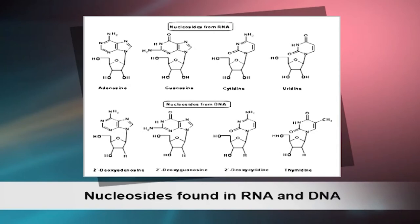A nucleoside is a unit consisting of a base bonded to a sugar through a C-N bond (beta glycosidic bond) with the loss of a water molecule. A beta glycosidic bond is formed between the carbon atom of the sugar and the nitrogenous base. The four nucleoside units in RNA are called adenosine, guanosine, cytidine, and uridine. Those in DNA are called deoxyadenosine, deoxyguanosine, deoxycytidine, and thymidine. In each case, N9 of a purine or N1 of a pyrimidine is attached to C1 of the sugar.